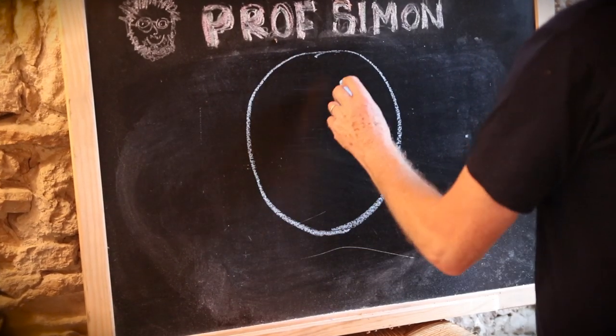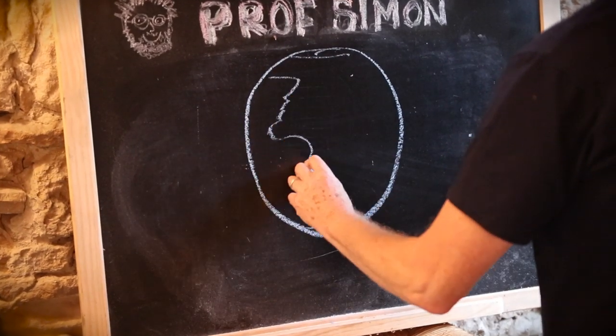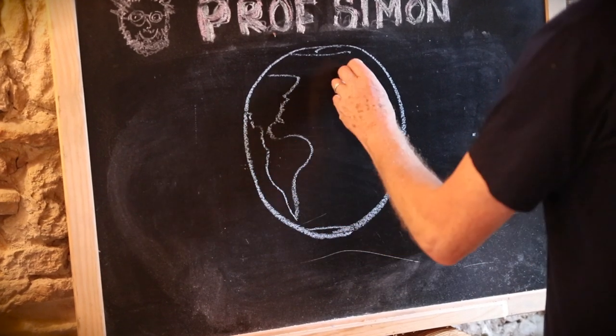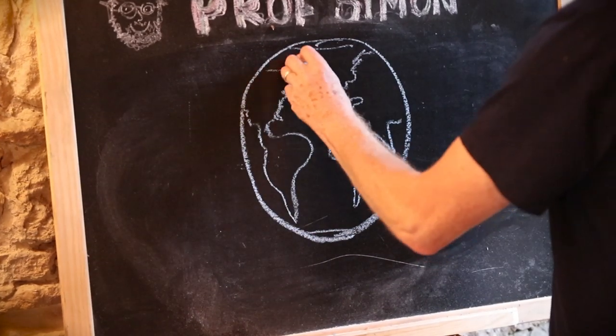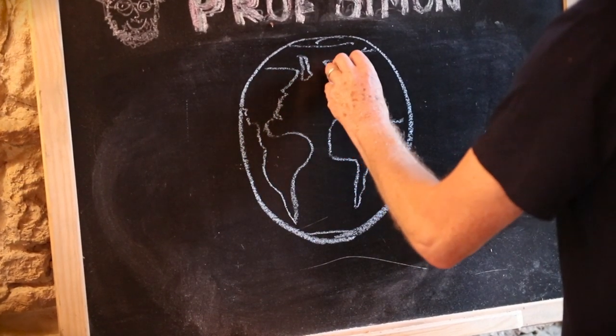Well, it turns out that our planet isn't exactly spherical. It's slightly bulbous at the equator.